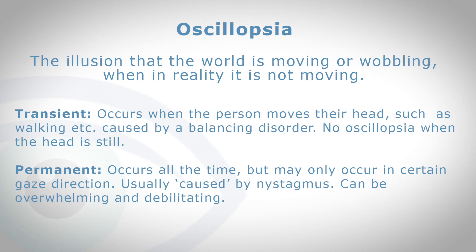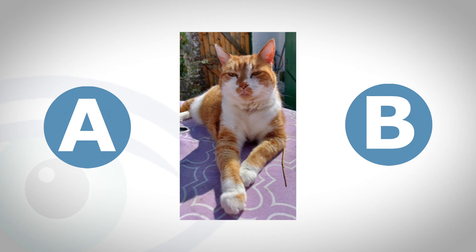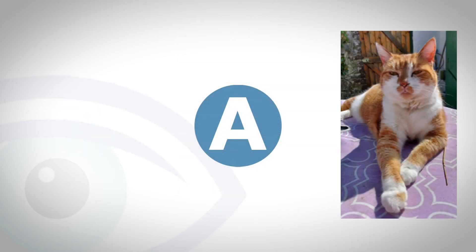Oscillopsia can be quite overwhelming and debilitating. So what actually causes it? The answer may seem obvious — it's the nystagmus of course. But it's not that simple. This is a picture of my cat. Her name is Pumpy because she's quite plump — a very pretty cat. You need good vision to be able to see her. Now let's imagine you were looking at point A over here. She would be in your right visual field, and if you look at A yourself you'll see that she's very blurry.